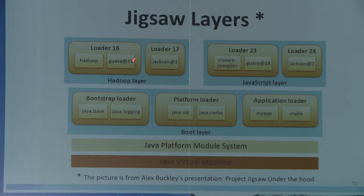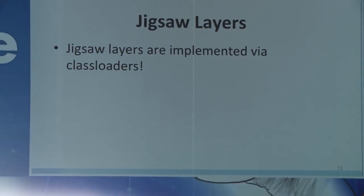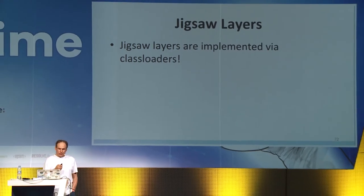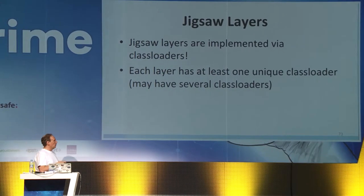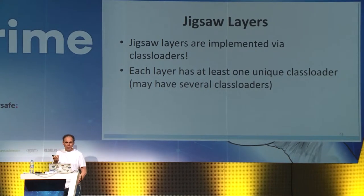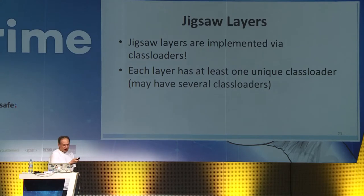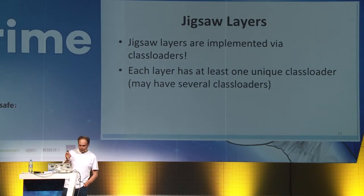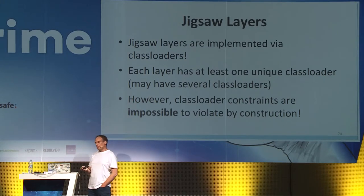Seeing different versions of the same library in different layers, it becomes interesting how Jigsaw layers are implemented internally. Of course, they are implemented via class loaders — each layer has at least one unique class loader, and may have several like the boot layer. You might exclaim: what about class loader constraints? Won't we have exactly the same problems as with versions? Actually not, because class loader constraints are impossible to violate by construction of Jigsaw layers.